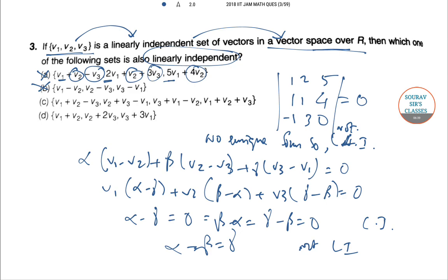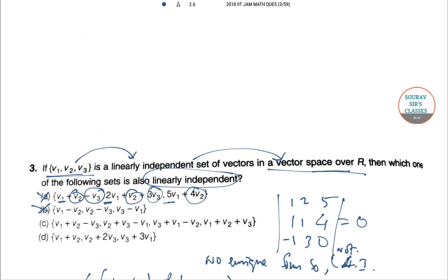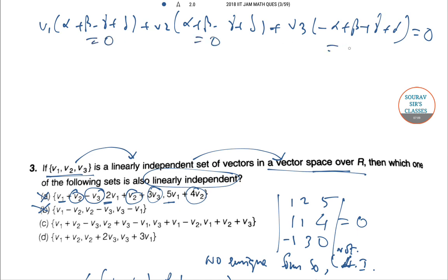Similarly for the next one: v_1 + v_2, v_1 - v_2, and v_3. We can write α(v_1 + v_2) + β(v_1 - v_2) + γv_3 + δv_3 = 0. This gives v_1(α + β) + v_2(α - β) + v_3(γ + δ) = 0. These equations hold for α = 1, β = -1, γ = 1, δ = -1, so these are also not linearly independent.